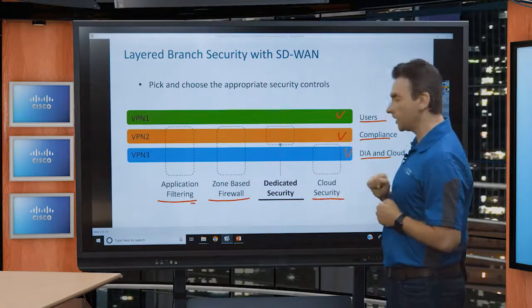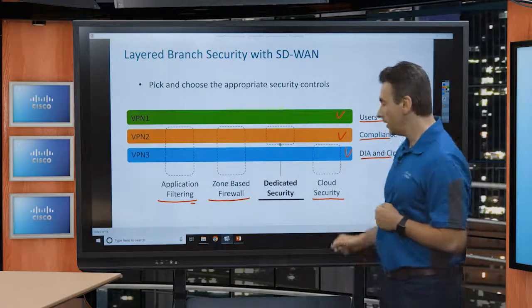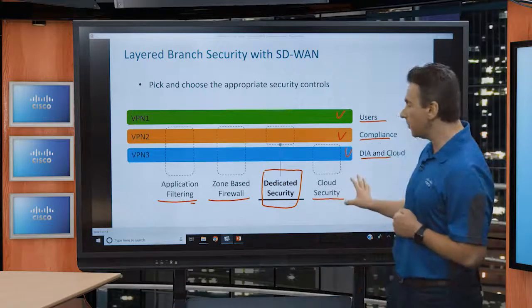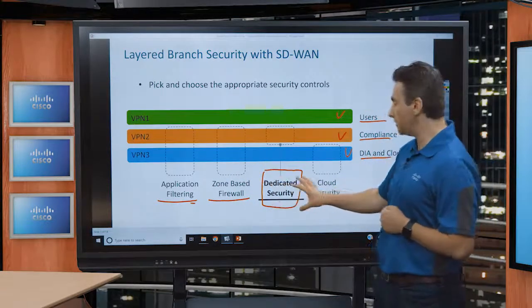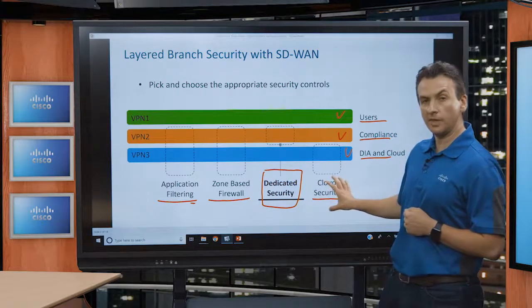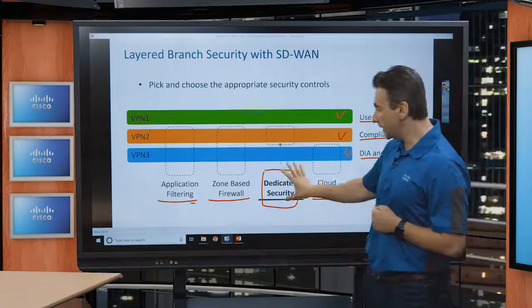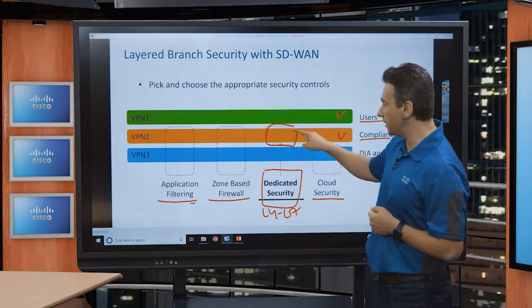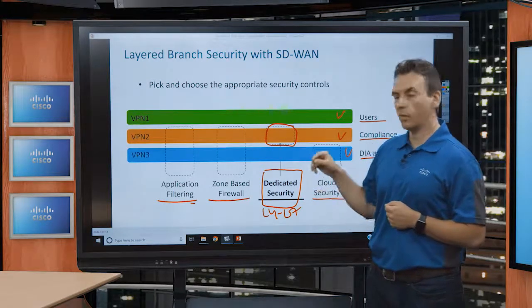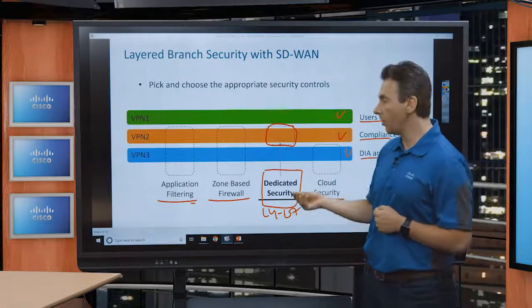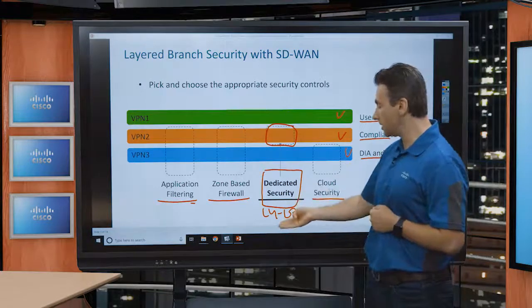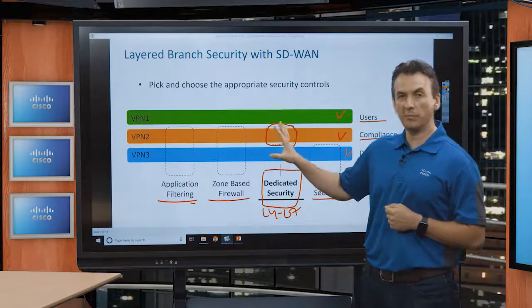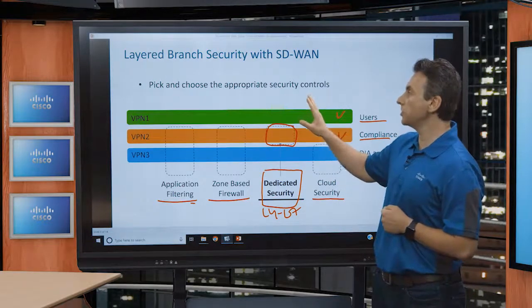For some applications going to the cloud, we can use cloud security. In this particular session we are focused on what you can think of as dedicated security — something not inherent within the SD-WAN fabric, and not necessarily residing in the cloud such as Cisco Umbrella. Rather, a layer 4 through layer 7 service that can be inserted in the context of a specific VPN for traffic of interest, where the SD-WAN fabric performs the steering of traffic between users and applications through this layer 4 to layer 7 device.